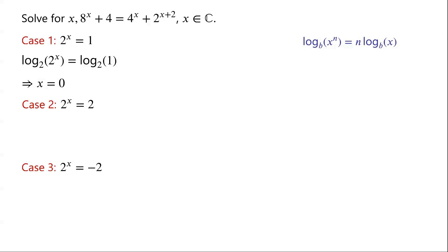For case 2, taking log to the base 2 of both sides, we have log base 2 of 2 to the power of x equals log base 2 of 2. Again, log base 2 of 2 to the power of x equals x times log base 2 of 2, which equals x. Log base 2 of 2 is 1, so x equals 1.